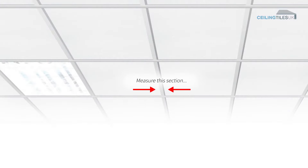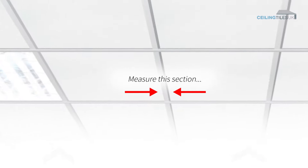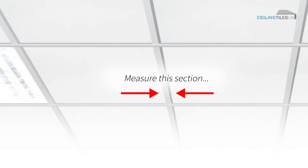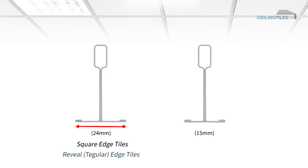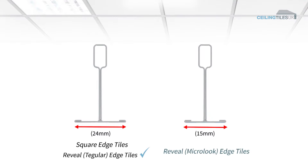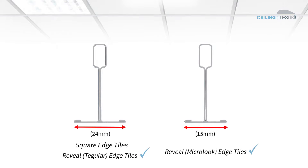To check the width, look up at the ceiling from the ground and measure the width of the metal section dividing the tiles. This is usually painted white. The grid width comes in two sizes. The most common grid width is 24 mm, which suits square and reveal, called tegula edge tiles, whereas the 15 mm narrow grid tends to only be associated with reveal, called microlook ceiling tiles.